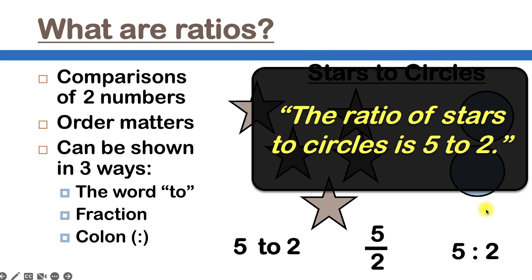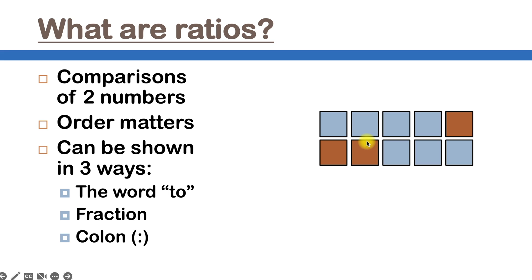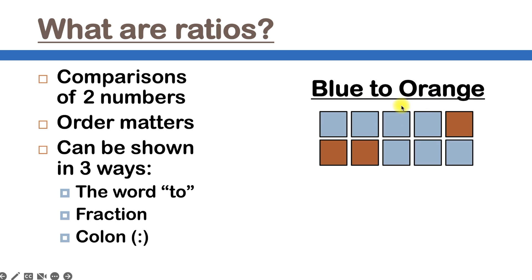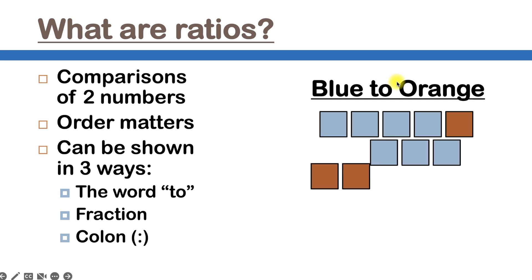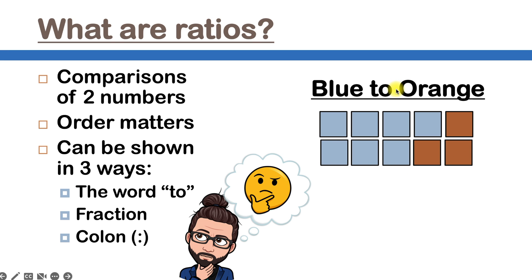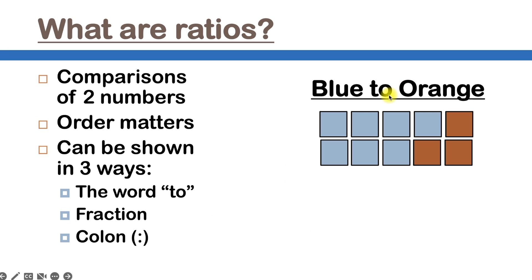Let's go over our last example. Here we're talking about the ratio of blue squares to orange squares. Let's rearrange the squares so it's a little bit easier to see. What do you think the ratio of blue squares to orange squares is? If you were guessing seven to three, you'd be absolutely right. Some students might look at this and say, couldn't the ratio just be three to seven? No — sorry, that would be wrong. Because order matters in ratios. Since we're talking about the number of blue squares first, the number of blue squares is the first number we write, and the number of orange squares will be the second number we write.